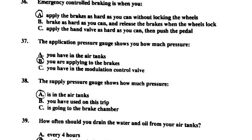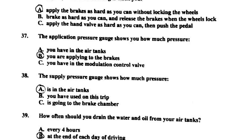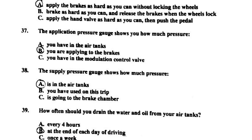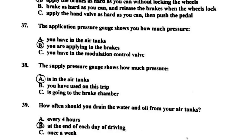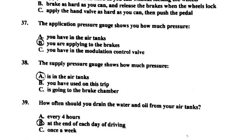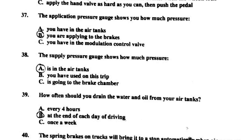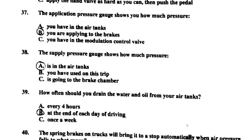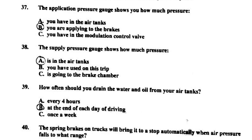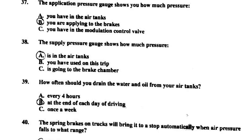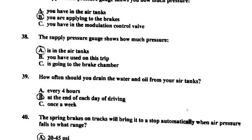Number thirty-seven: the application pressure gauge shows you how much pressure — B, you are applying to the brakes. Number thirty-eight: the supply pressure gauge shows how much pressure — A, is in the air tanks. Number thirty-nine: how often should you drain the water and oil from your air tanks? — B, at the end of each day of driving.